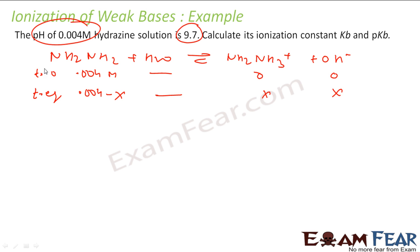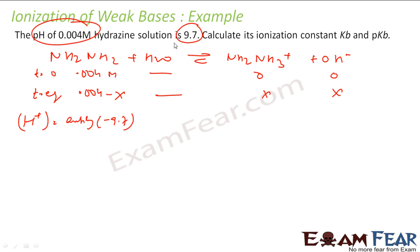The pH is given as 9.7. From pH I can find the H⁺ ion concentration: [H⁺] = antilog(−9.7), which comes out to be 1.67 × 10⁻¹⁰.